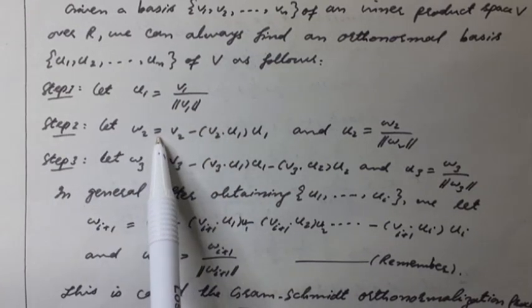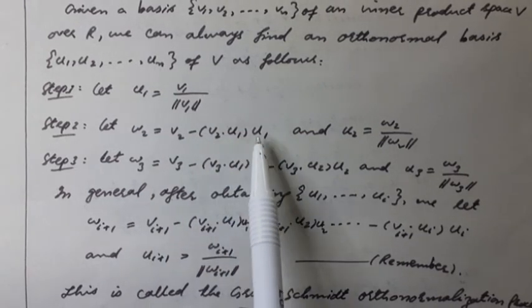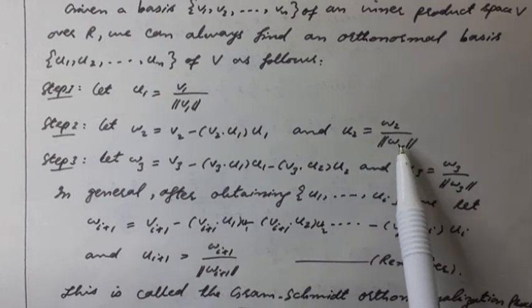Step 2: Let W2 is equal to V2 minus the inner product of V2 with U1, and U2 is equal to W2 over the norm of W2.